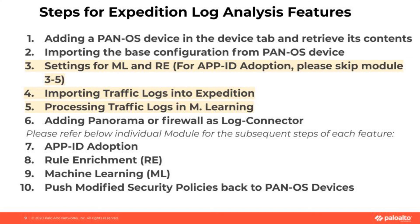In module 6, adding Panorama or firewall as a log connector. After module 6, there are separate modules showing the subsequent steps for each feature. Module 7 is specific for App ID Adoption. Module 8 is for Rule Enrichment. Module 9 is for Machine Learning.